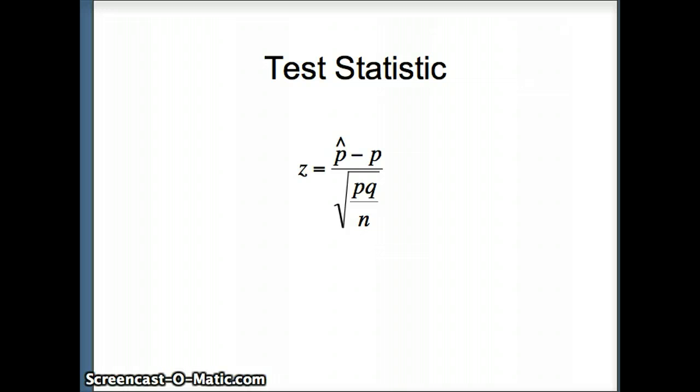The test statistic we use here is z, which is going to equal p-hat minus p, divided by the square root of pq over N.